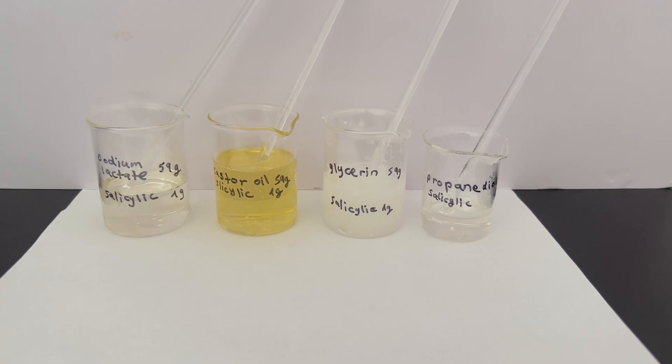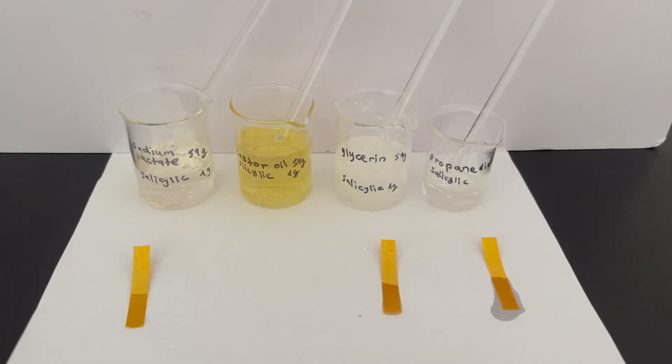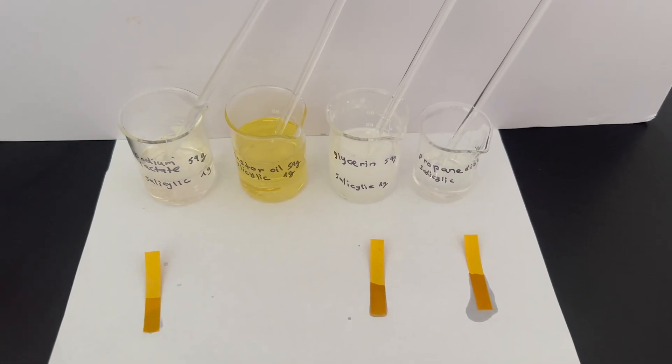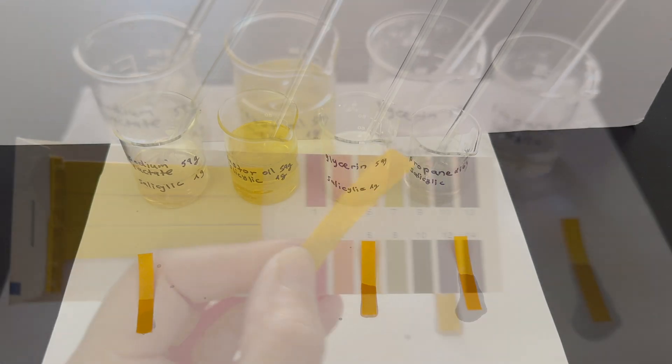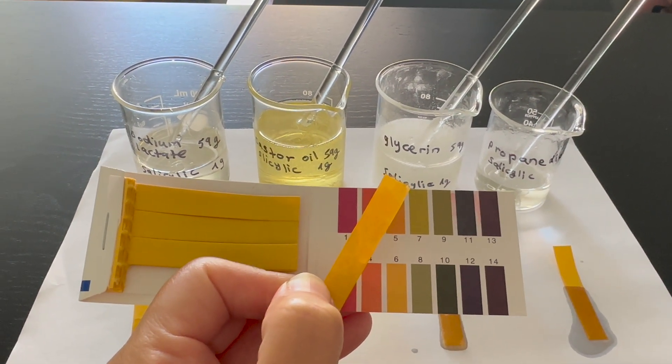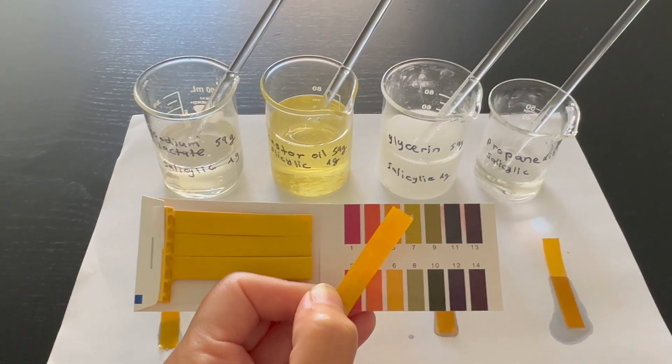When you make a salicylic acid solution, you can label it with the date you made it and also check the pH level on the day you made it. Write down this information so you will have it when you want to use the solution in a formula. I wrote about the pH levels for products with salicylic acid. You can read about it in the written post. The link is in the description.